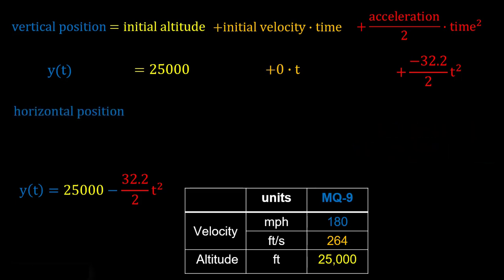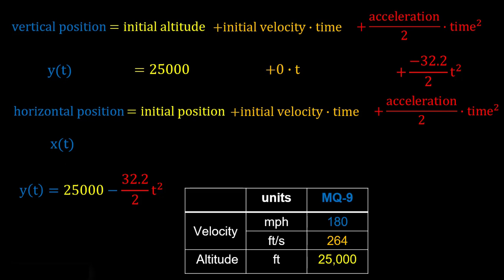Next, we'll go ahead and look at our horizontal position, which is going to be our initial position plus our initial horizontal velocity times time plus our horizontal acceleration over 2 times time squared. And we'll call our horizontal position X of T. And our initial position, we'll arbitrarily call 0 because that makes things easy. Our initial velocity we'll pull from down here, that horizontal speed of our plane.